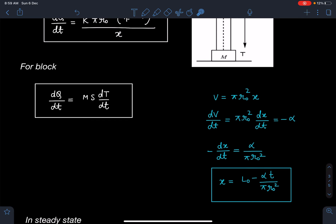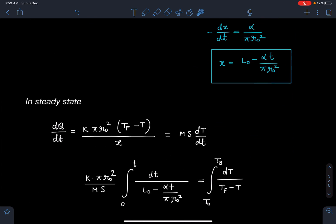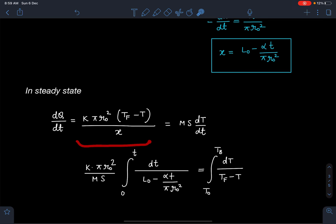Now in steady state I can equate kπr₀²(Tf - T)/x equals Ms dT/dt. Let's separate the variables and substitute the value of x, so I am going to get kπr₀²/Ms times dt/(L₀ - αt/πr₀²) and other side I am going to get dT/(Tf - T). When temperature of the block goes from T₀ to Tb, time goes from zero to general time t.